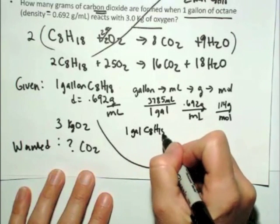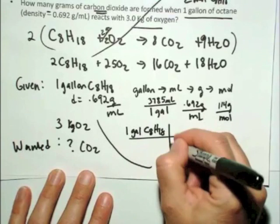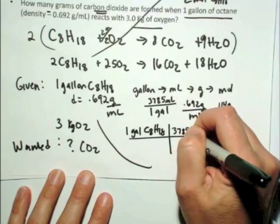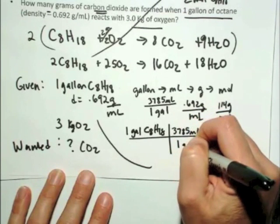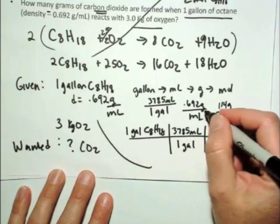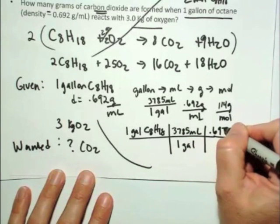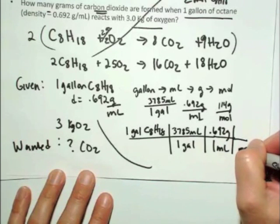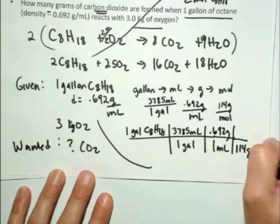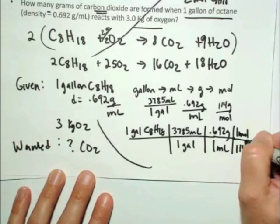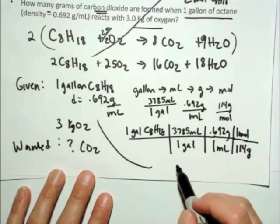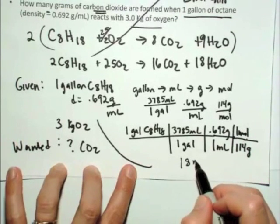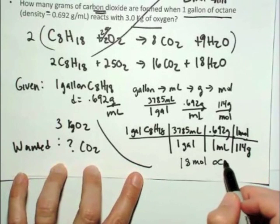Converting to milliliters, 3,785 milliliters per one gallon. Converting to grams, it's 0.692 grams per one milliliter, converting to moles, I put the 114 grams on the bottom per one mole of octane on top, and I end up here with about 18 moles of octane in one gallon of octane.